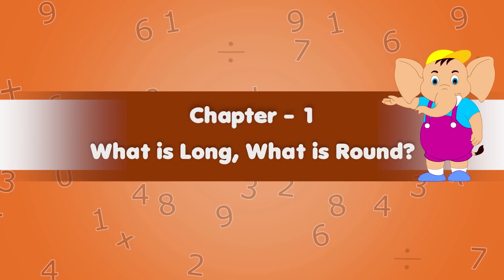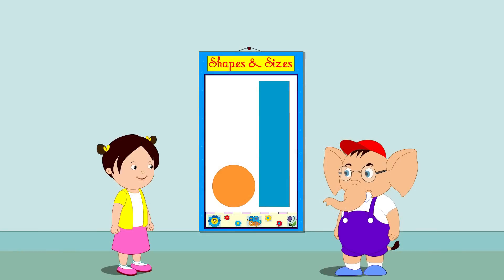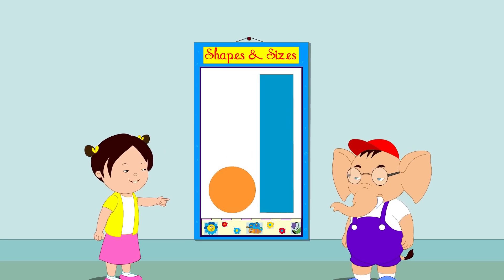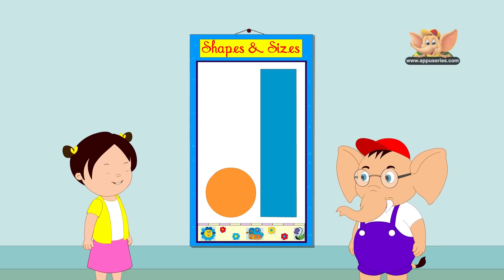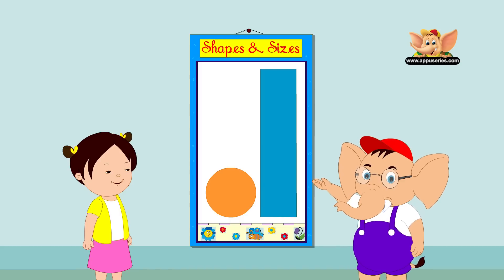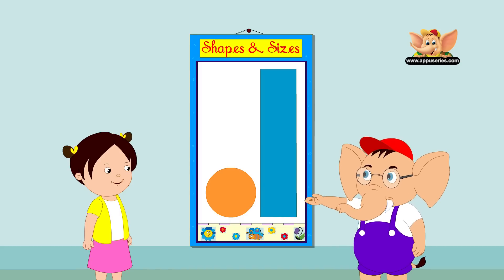Chapter 1. What is long, what is round? Abu, you look so round to me. Yeah, I am round. There are many other shapes and sizes.